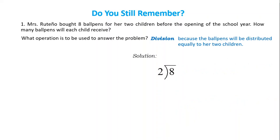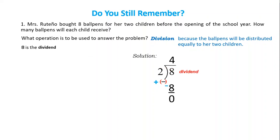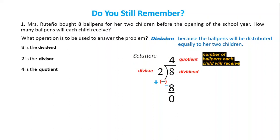Solution. Eight divided by two is equal to four. Four times two is eight. Then subtract — apply the subtraction of integers rule: change the sign to subtract and then proceed to addition. Eight plus negative eight is zero. Let's label: eight is the dividend, two is the divisor, four is the quotient, and four is the number of ballpens each child will receive. Zero is the remainder.